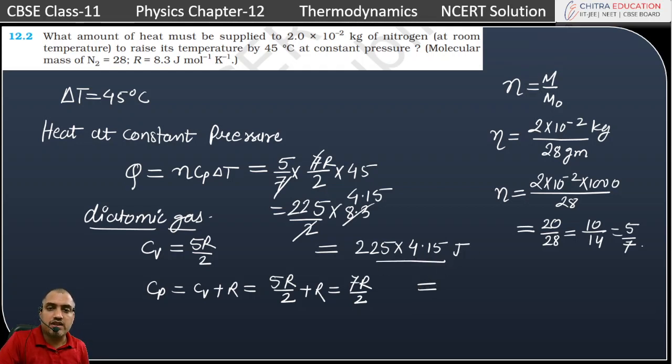We multiply 225 × 4.15, and the final answer is 933.75 Joules.